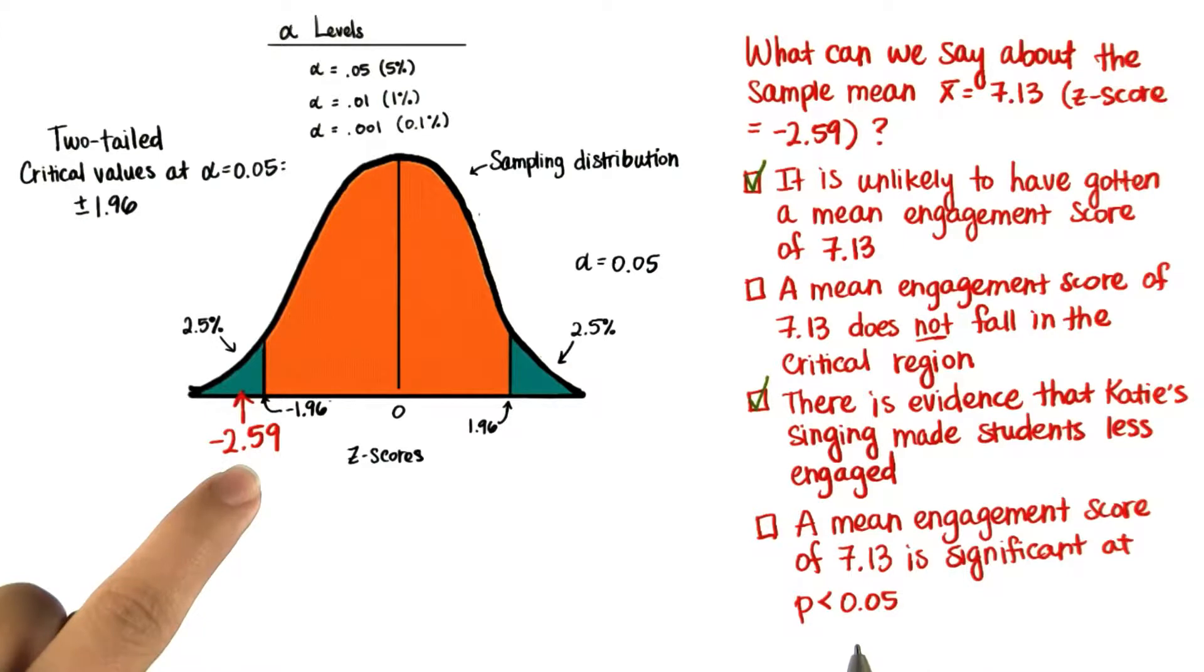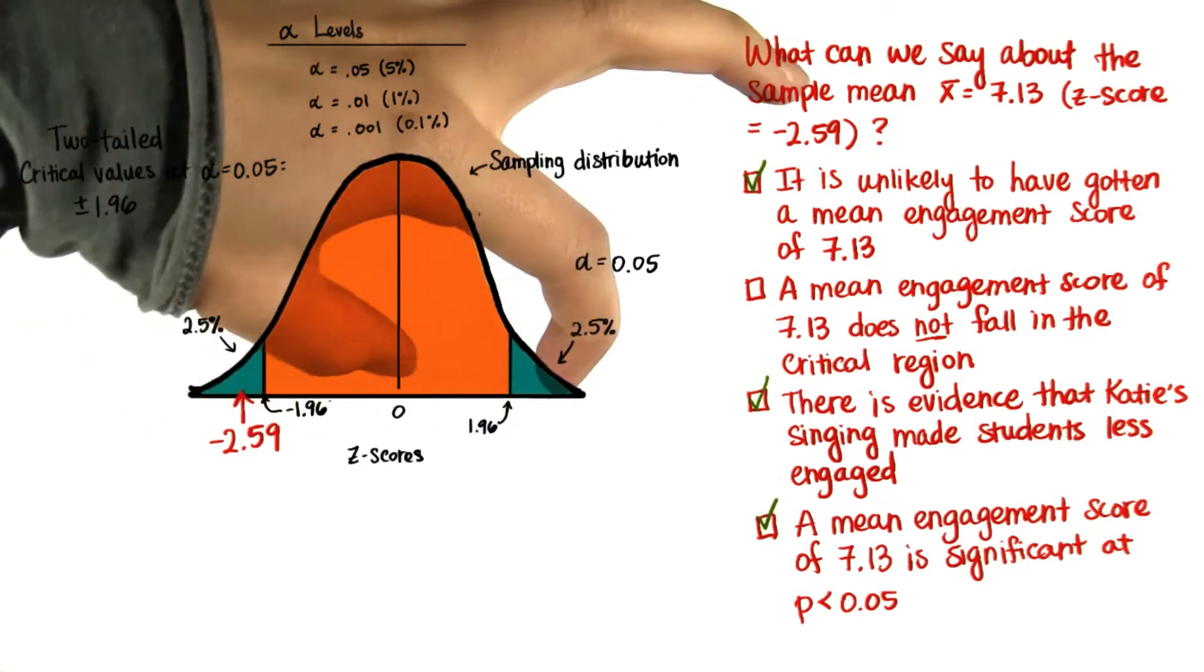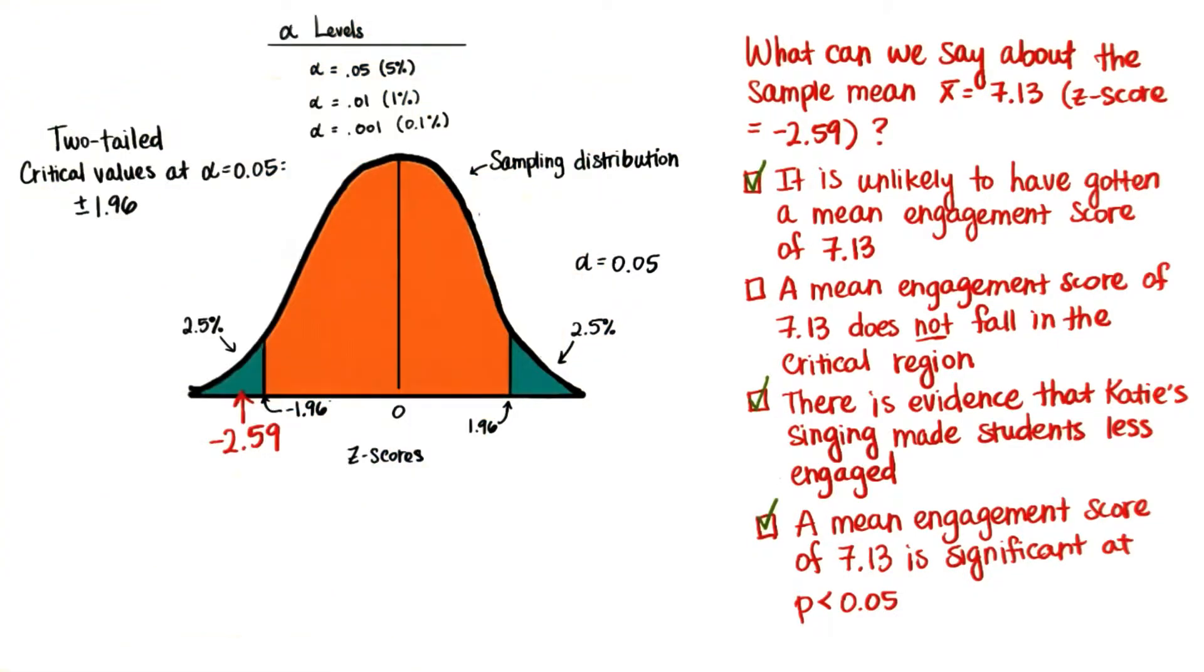And we can also say that a mean engagement score of 7.13 is significant at probability less than 0.05. The probability of getting an engagement score this far from the mean in either direction is less than 0.05. That's basically what that means when we do a two-tailed test.